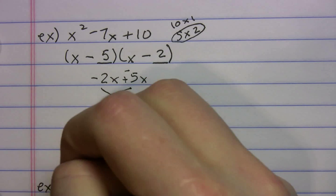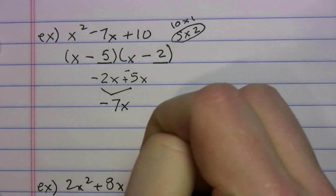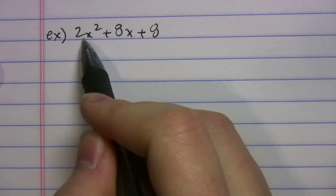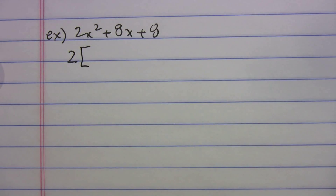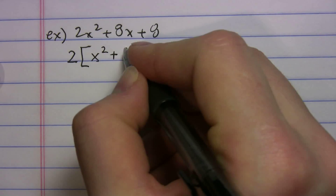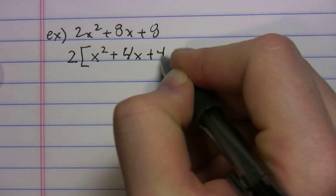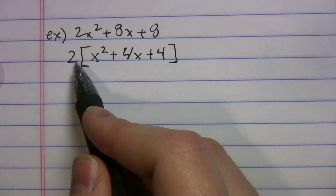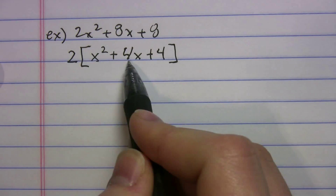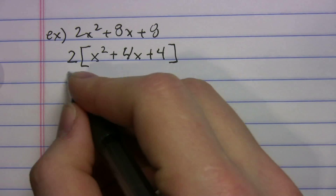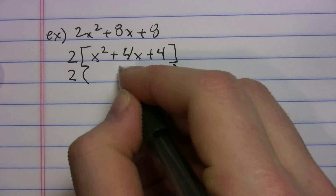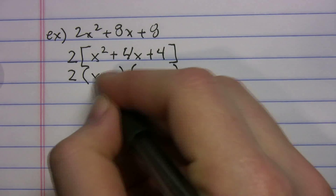Let's do one more: 2x² + 8x + 8. Don't get intimidated by the 2 in front of x squared — you can factor it out. Pull out a 2, and what's left inside the brackets is x² + 4x + 4. Check: 2 times x² = 2x², 2 times 4x = 8x, and so on — it gives back the original.